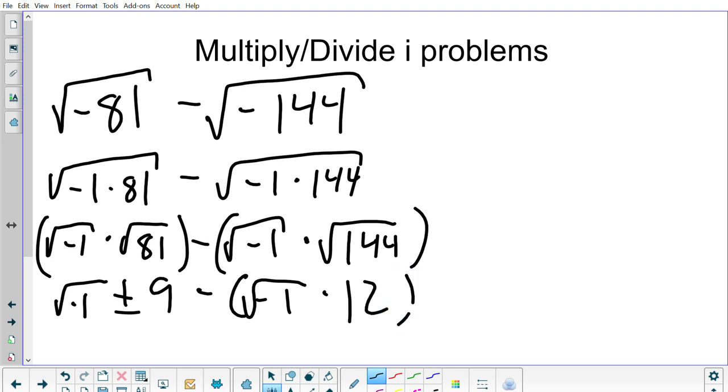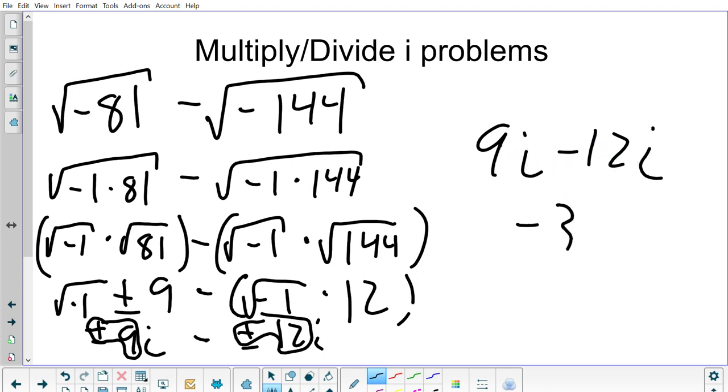So then we are going to say that this is the same as plus or minus 9i minus plus or minus 12i. We're going to just assume positive for the sake of combining them. So then it would be 9i minus 12i because positive and negative make a negative, and then 9i minus 12 is negative 3i.